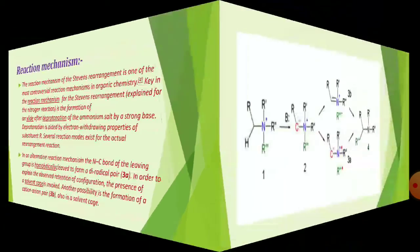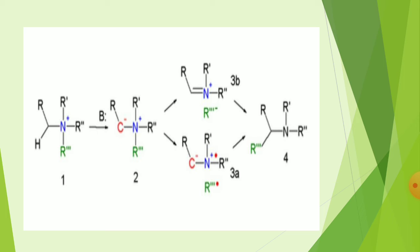In the direct mechanism: first, a quaternary ammonium salt (A) reacts with a base (B) — a proton is abstracted from the carbon — forming a carbanion C-minus. Then, through nitrogen bond participation, the R group migrates: the R group leaves from nitrogen and attacks the carbanion carbon (which has a double bond), so nitrogen's lone pair is released, giving amine formation.